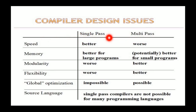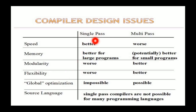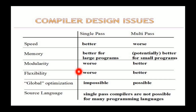Let's discuss the difference between single-pass and multi-pass compilers. A single-pass compiler is better in terms of speed, but when talking about modularity, memory, and flexibility, a multi-pass compiler is better. In case of optimization, a single-pass compiler cannot optimize the source code as much, while a multi-pass compiler has a much greater ability to optimize the code.